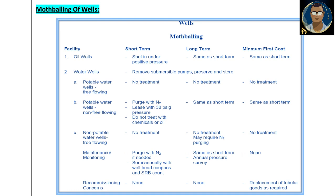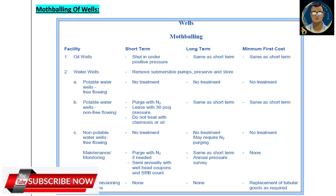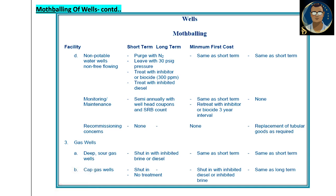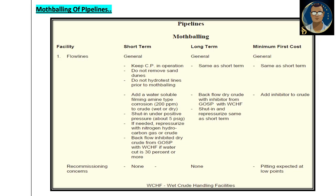I am putting some tables in my slides — if you want to go into detail, stop the video and take notes. The tables list mothballing procedures by facility type, showing short-term, long-term, and minimum first cost mothballing for each. For example, for wells: oil wells, water wells, non-potable water wells (non-free flowing), monitoring and maintenance, recommissioning concerns, and gas wells are all covered. This is more relevant to our channel, so I will read the flow line section for you.